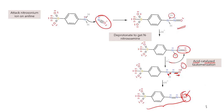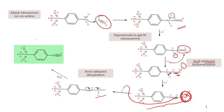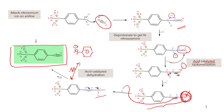The OH group in the intermediate can get dehydrated very easily via acid-catalyzed dehydration: H+ attacks, then H2O is removed, and you get the benzene diazonium ion. For the diazonium ion's resonance structure, a better form is the triple bond N≡N+ rather than N=N+ with a positive charge, because it has one more bond formed. Importantly, the diazonium ion attacks from the terminal nitrogen - not from the other nitrogen - because nitrogen cannot make five bonds.